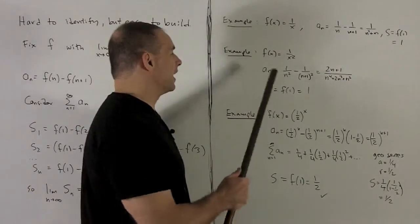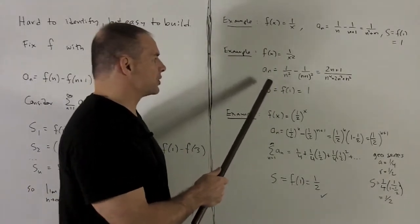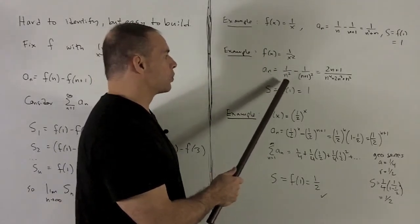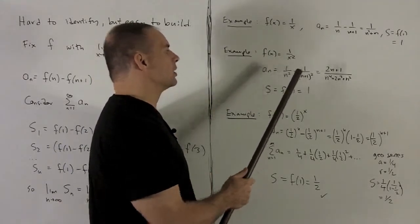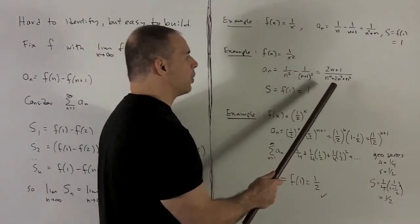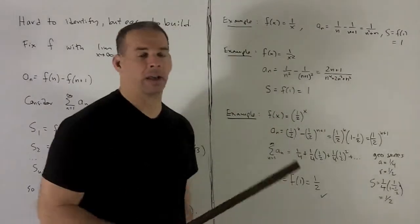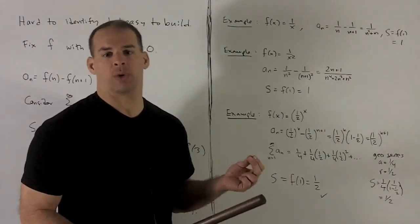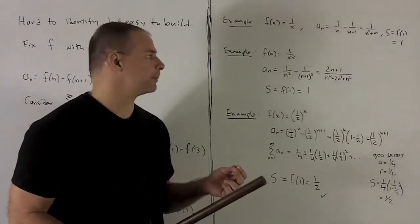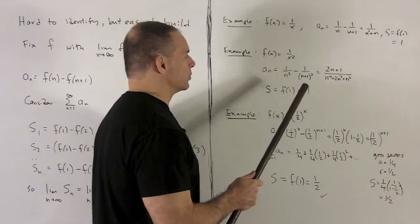For another example, let's try f of x equal to 1 over x squared. In this case, our a sub n is going to be equal to 1 over n squared minus 1 over n plus 1 squared. We clean that up, and that gives me 2n plus 1 over n to the fourth plus 2n cubed plus n squared. And I'd never guess that's a telescoping series just by looking at it. Our sum is just given by f of 1, and that's going to be equal to 1.